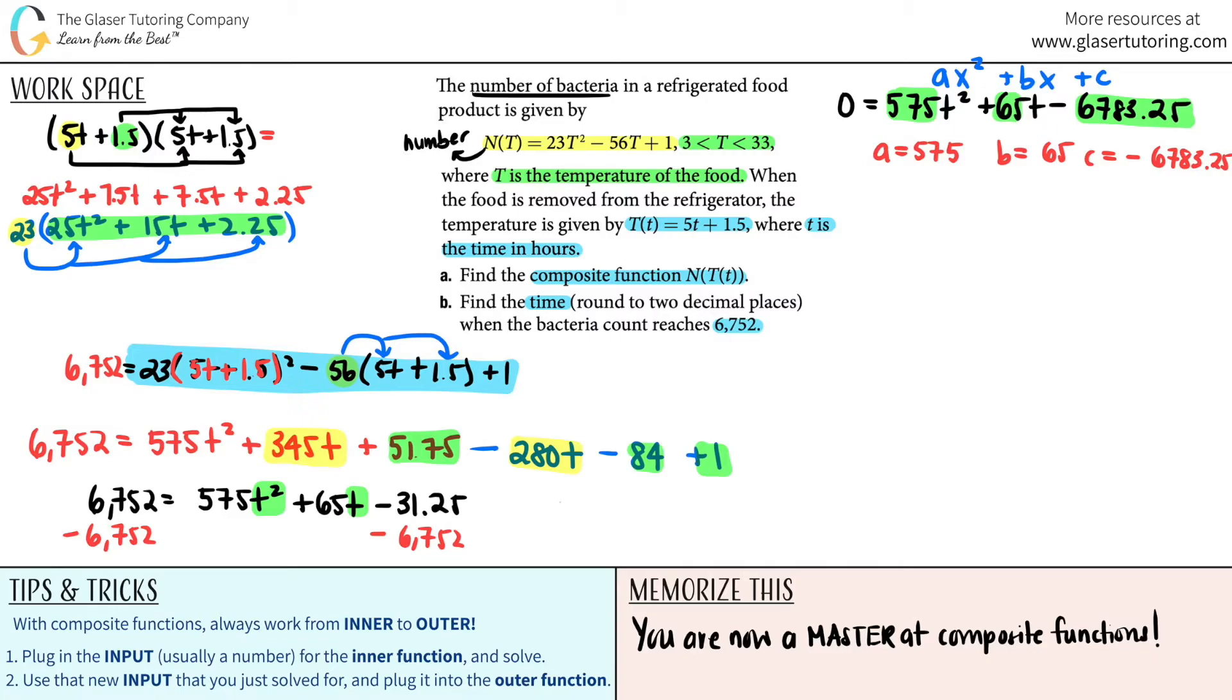Quadratic formula is, in this case we're solving for T, so t = (-B ± √(B² - 4AC)) / 2A. Now chances are your calculator might be able to do this. Some calculators come with an app for the quadratic formula. I'm just going to show you to plug in the numbers. So t = (-65 ± √(65² - 4(575)(-6783.25))) / 2(575).